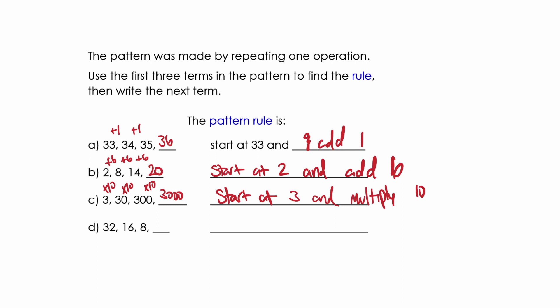The last example is going down. So it's either subtraction or division. If you guessed division, you are correct. The next term is four. Start at thirty-two and divide by two.